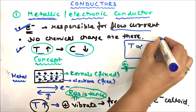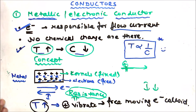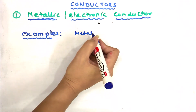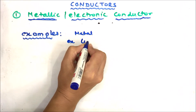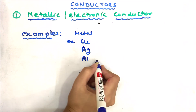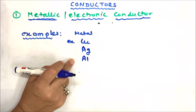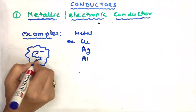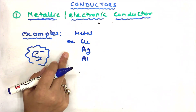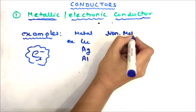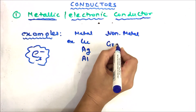This is a very important point to keep in mind. Now let's look at examples of metallic conductors. Almost all metals are metallic conductors — for example, copper, silver, aluminum, iron, etc. Among non-metals, some carbon allotropes also act as metallic conductors; for example, graphite.